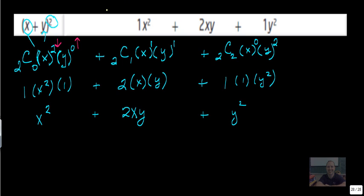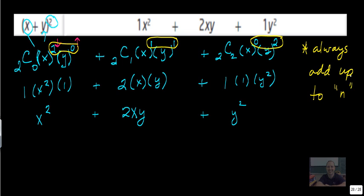A couple things I will note here is that these exponents there, there, and there, they must always, always add up to n. In this case, n is 2.